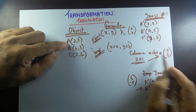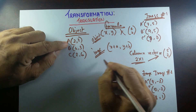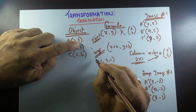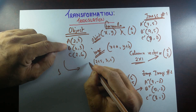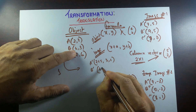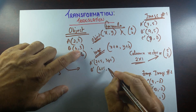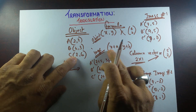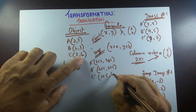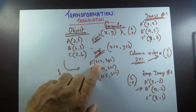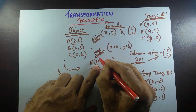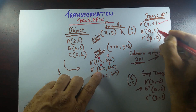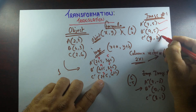Let's verify it works. In the first case, the object is ABC and the column vector is (5,2). So A' = (2+5, 3+2) = (7,5). B' = (4+5, 3+2) = (9,5). And C' = (2+5, 6+2) = (7,8). This confirms the formula.